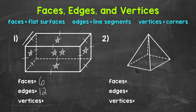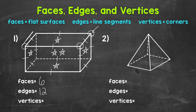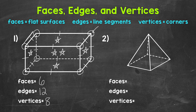And then lastly, let's identify and count the number of vertices — those are the corners or points created by three or more edges meeting. Let's start and work our way around: one, two, three, four, five, six, seven, eight. So eight total vertices. So for a rectangular prism, there are six faces, twelve edges, and eight vertices.